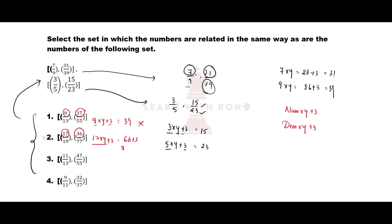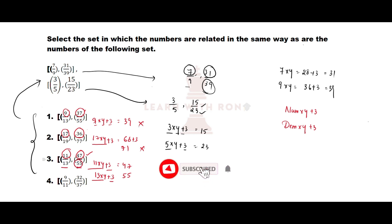Checking the third option with 11 and 47: 11 times 4 plus 3 — 11 times 4 is 44, plus 3 is 47, which is the numerator of the second fraction. Now verifying the denominators 13 and 55: 13 times 4 is 52, plus 3 is 55, which is the denominator of the second fraction. So the third option is our answer.